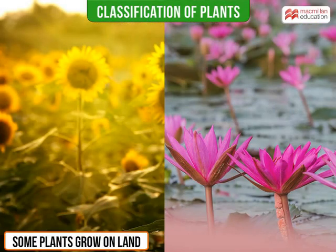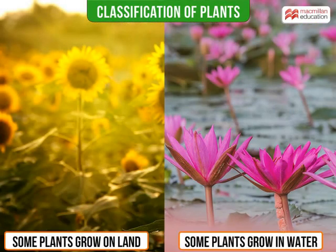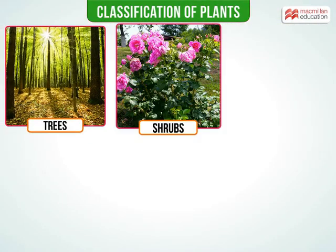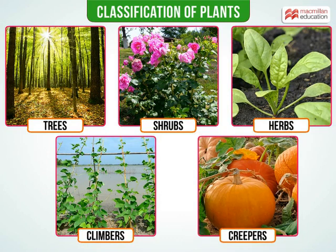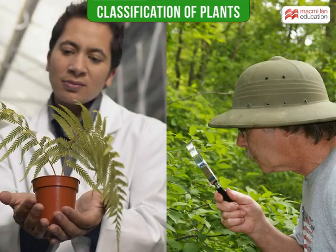Another classification can be based on where they live. The classification system is very useful. It is used by people in different kinds of work. Scientists classify plants to help explain relationships of different species of plants and to be able to learn newly discovered plants.